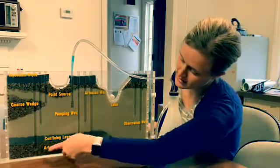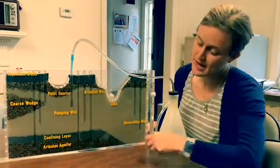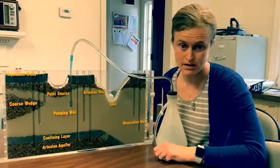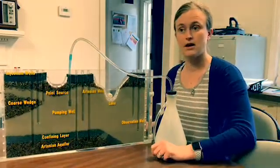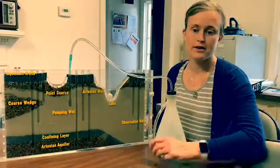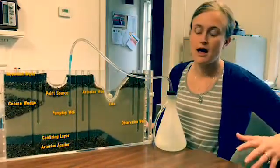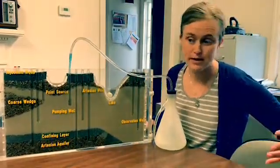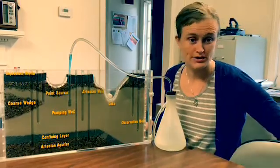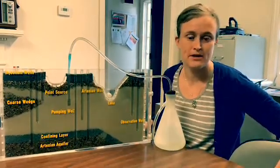Below it we have some water stored in what we call an artesian aquifer. An artesian aquifer is water that is below a confining layer of rock which can protect it from any pollution sources but also puts it under a little bit of pressure.